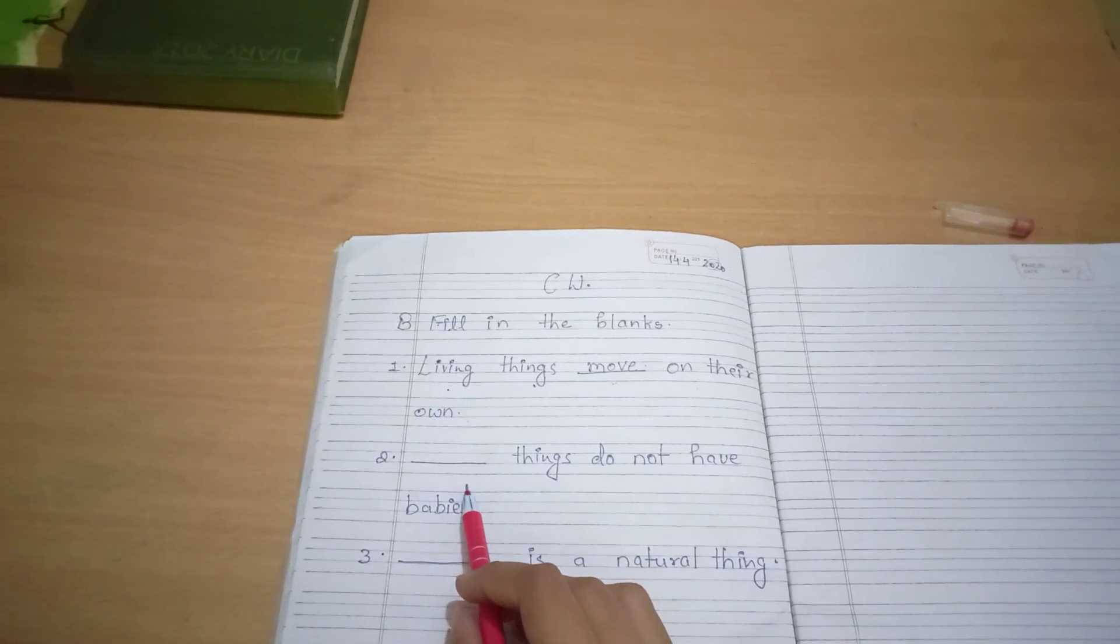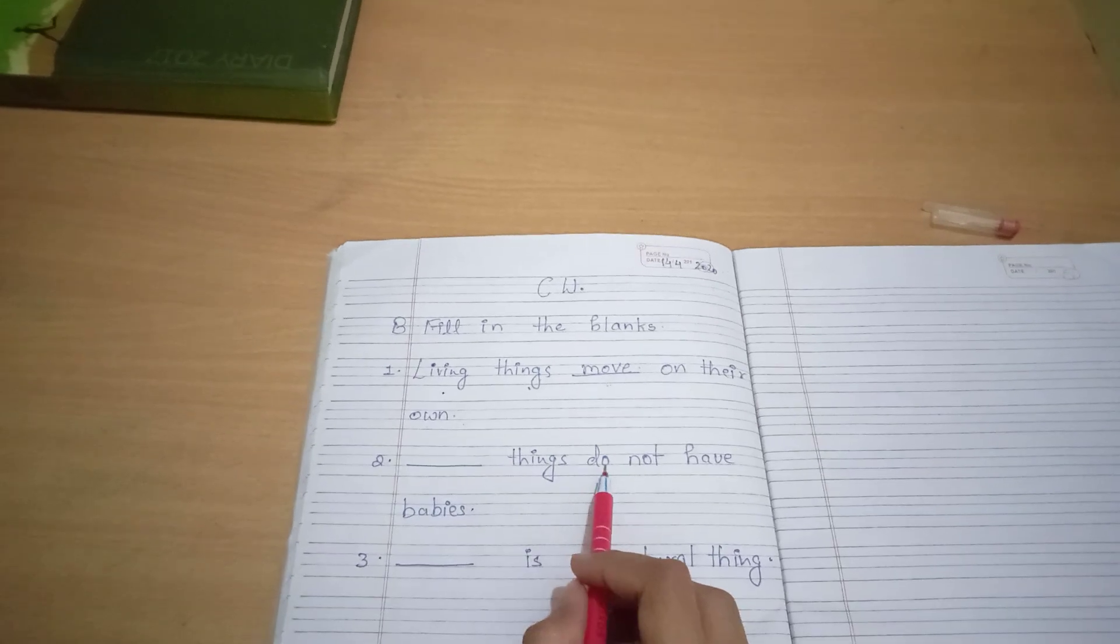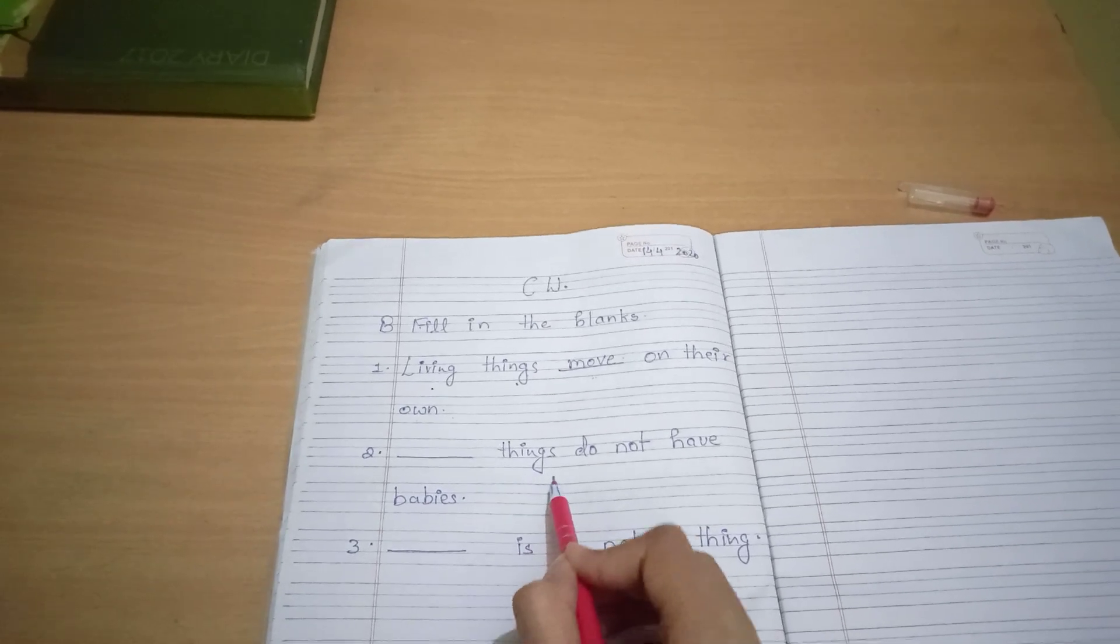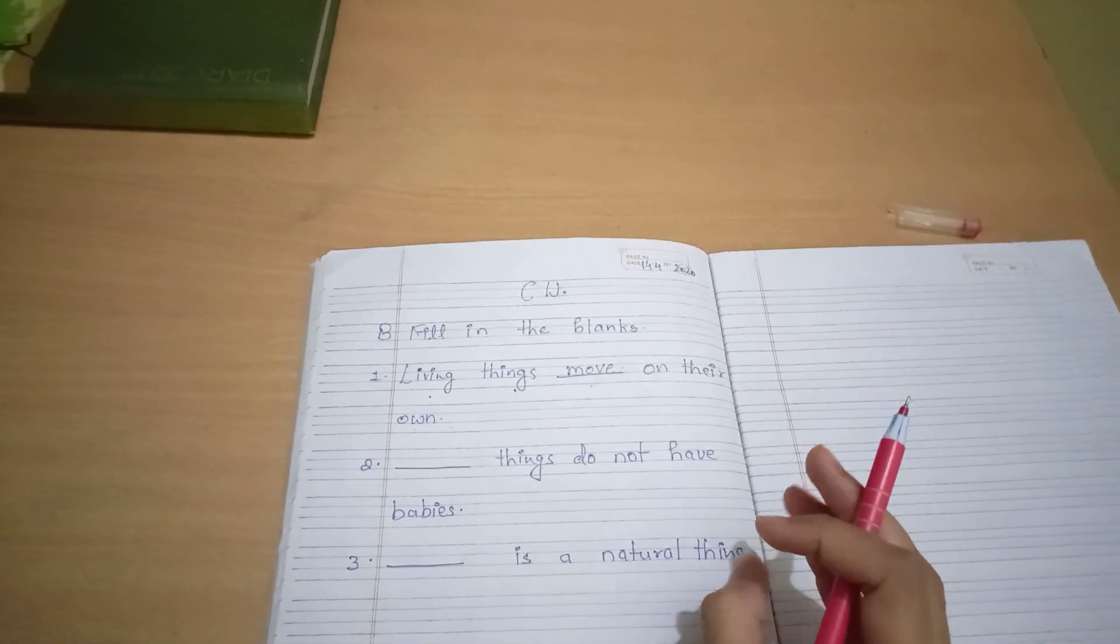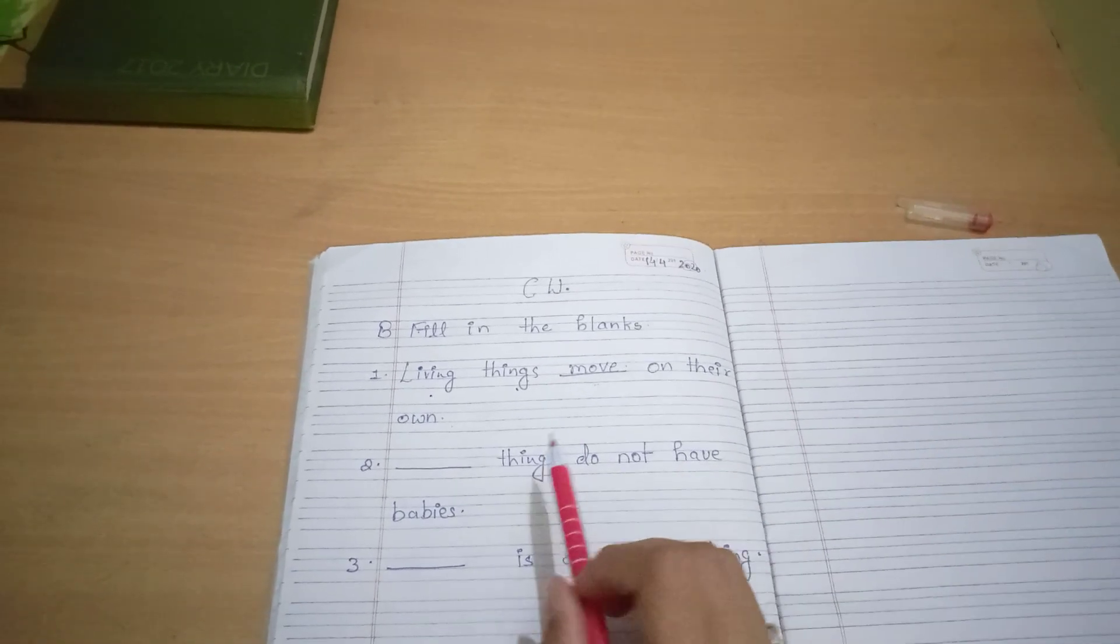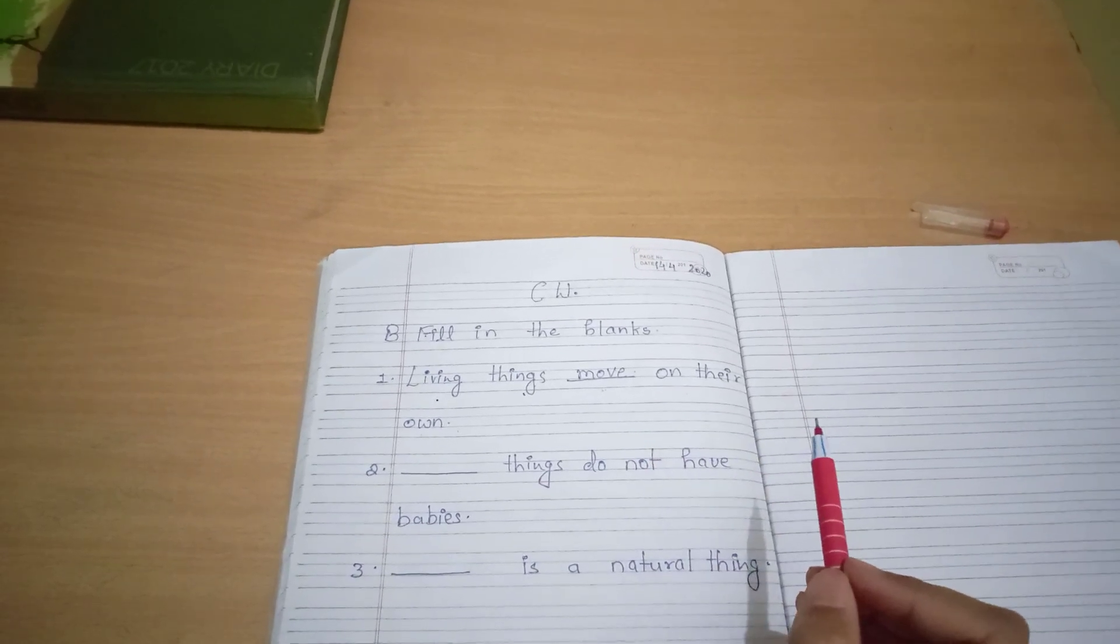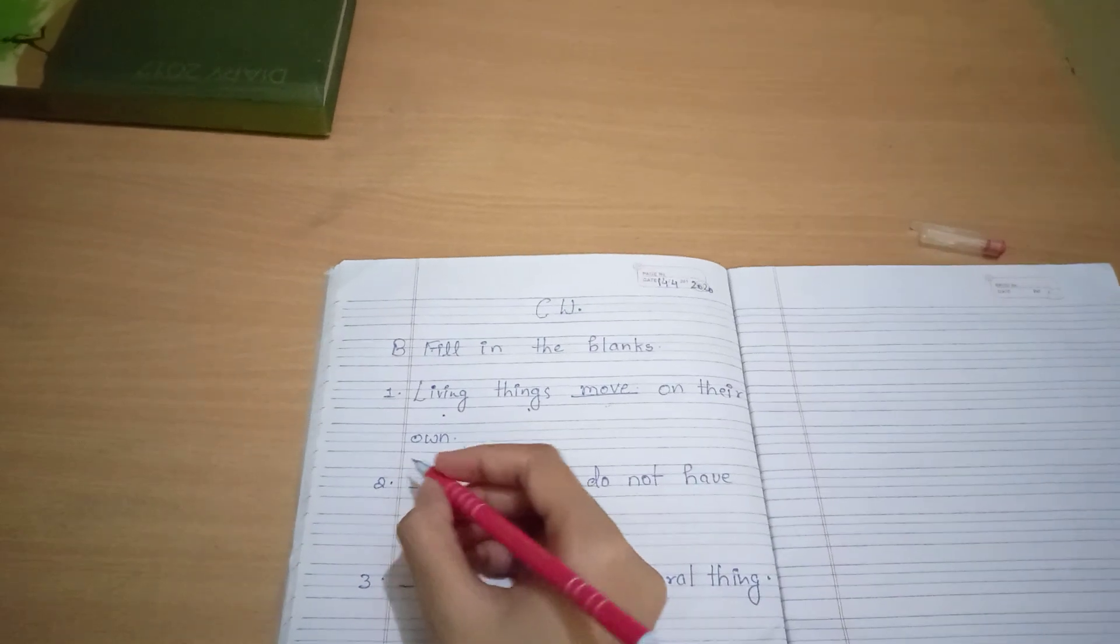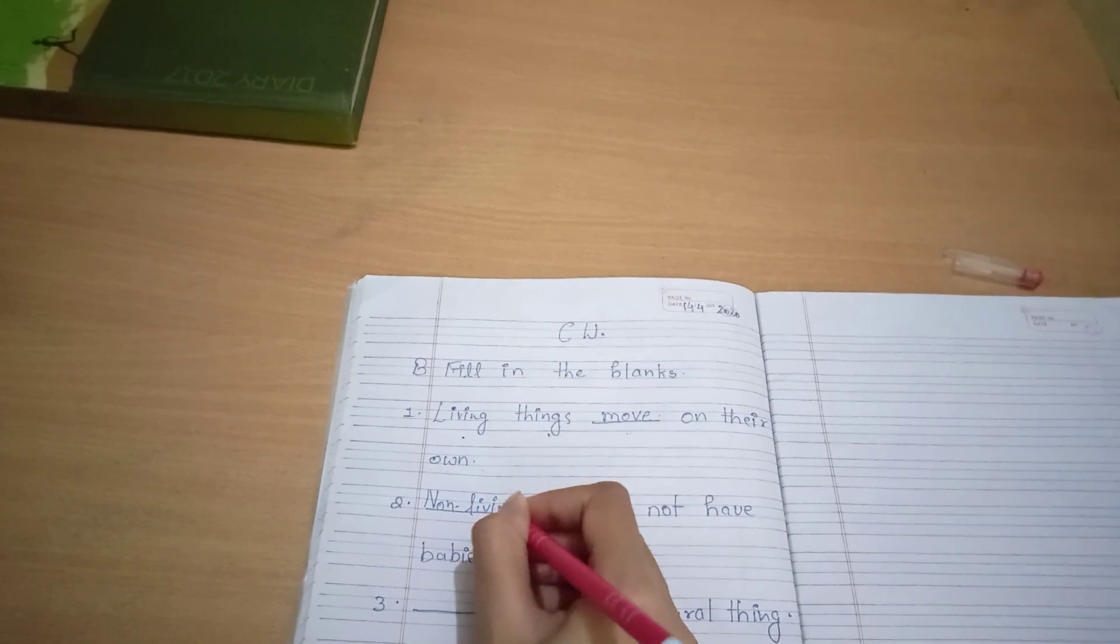Now number two, dash things do not have babies. That means which things do not have babies. Now we have here four things: living things, non-living things, natural things and man-made things. So natural things and man-made things में ऐसा कुछ भी नहीं था. But living things में and non-living things, इन दोनों में से किसके babies नहीं होते हैं? Living things के babies होते हैं, तो बच्या कौन? Non-living things. So यहां पे हम लिख देंगे क्या? Non-living things.